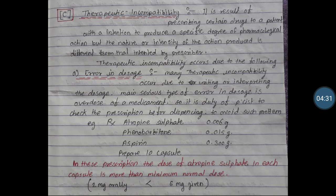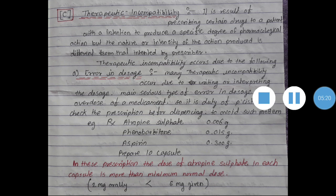This is a perfect example of error in dose — that is, an overdose. There may also be prescriptions with a low dose, but the most serious type of error in dose is overdose, because it can show harmful or adverse effects to the patient. Therefore, it is the duty of the pharmacist to check the prescription before dispensing to avoid such problems.